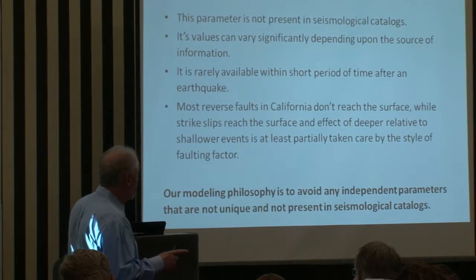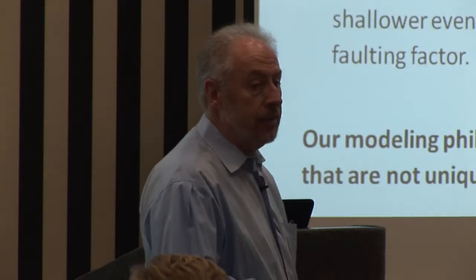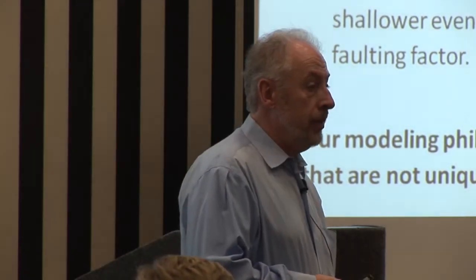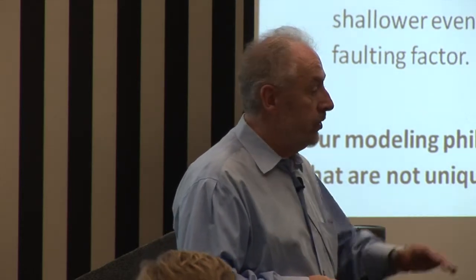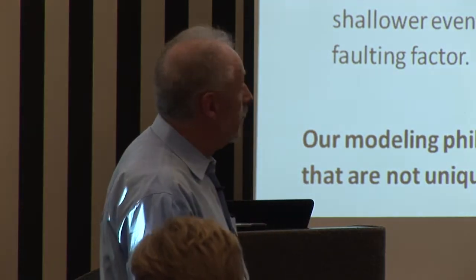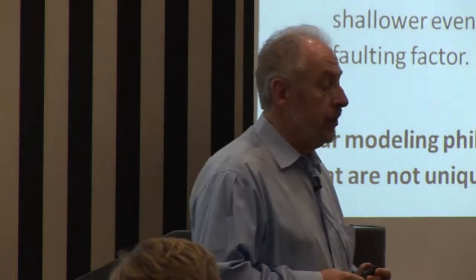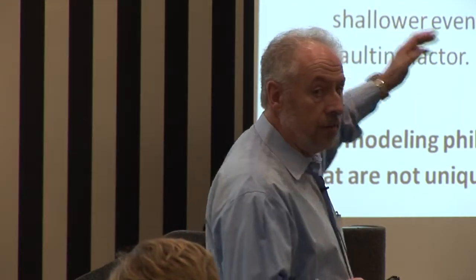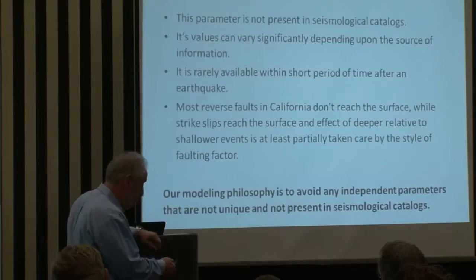There is a correlation between dip-slip or reverse faults and ZTOR. From my experience, almost all reverse faults are relatively deep compared to strike-slip. This is why the factor of 1.28 for reverse faulting relative to 1.0 is partially taking care of the depth to rupture.